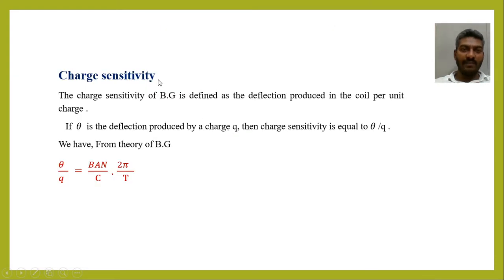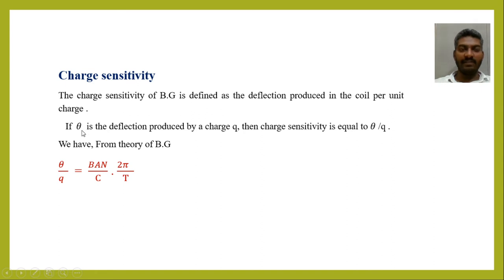Charge sensitivity of a BG is defined as the deflection produced in the coil per unit charge. If θ is the deflection produced by a charge Q, then charge sensitivity is equal to θ/Q. This can also be defined as the amount of charge required to produce unit deflection on the scale when the scale is placed at a distance of 1 meter from the ballistic galvanometer. From the theory of the ballistic galvanometer, θ/Q = BAN/C × 2π/T. This is the expression for charge sensitivity.